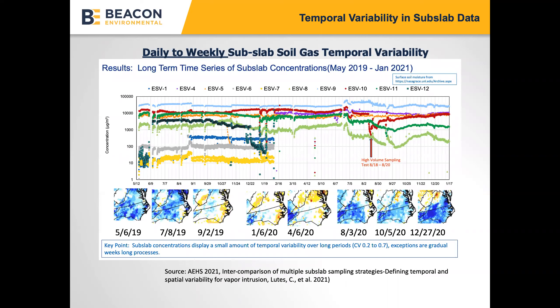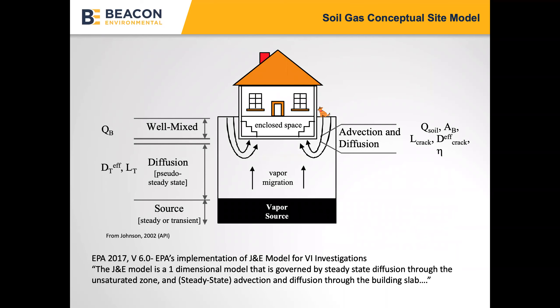Looking at daily to weekly sub-slab soil gas temporal variability changes on a log scale, the lines are squiggly and since we're talking about order-of-magnitude scale, those are pretty significant when looking at vapor intrusion risk models. Any change or difference is significant, so the question is: when is the right time to sample, or what is the best way to sample considering that there's temporal variability both indoors, in soil gas, and sub-slab? That's the background as to why this technical evaluation is important.